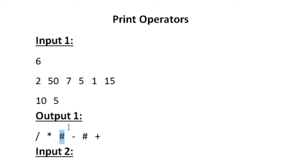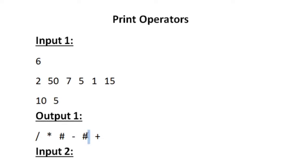The next value is 5. Since 10 minus 5 is 5, we print subtraction. For the value 1, we won't get it from any operation, so we print hash. Then for 15, since 10 plus 5 is 15, we print the addition operator.